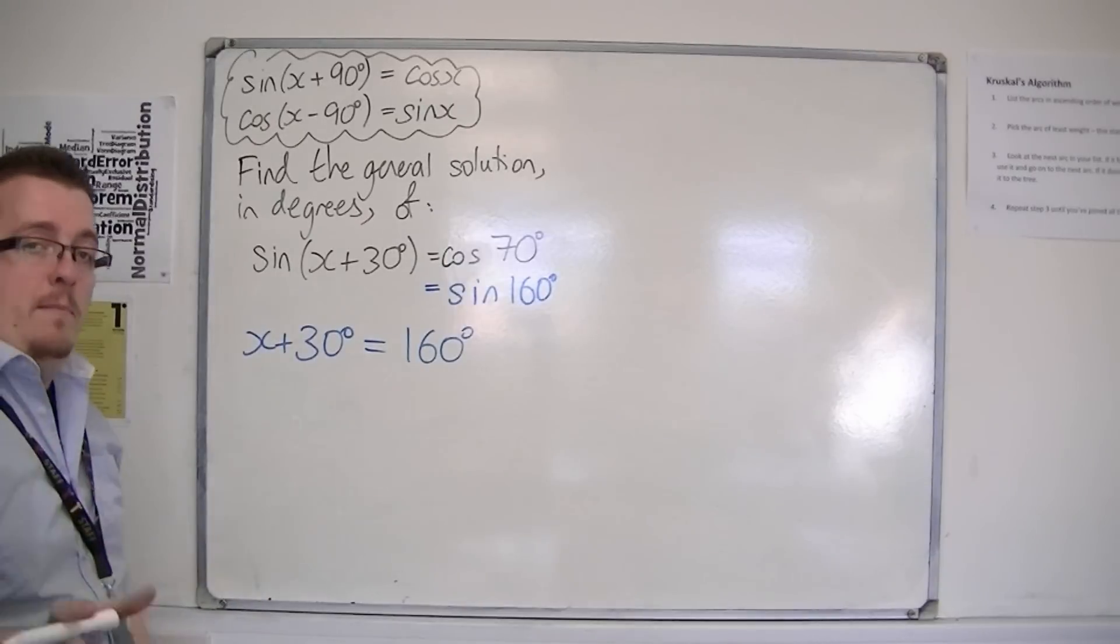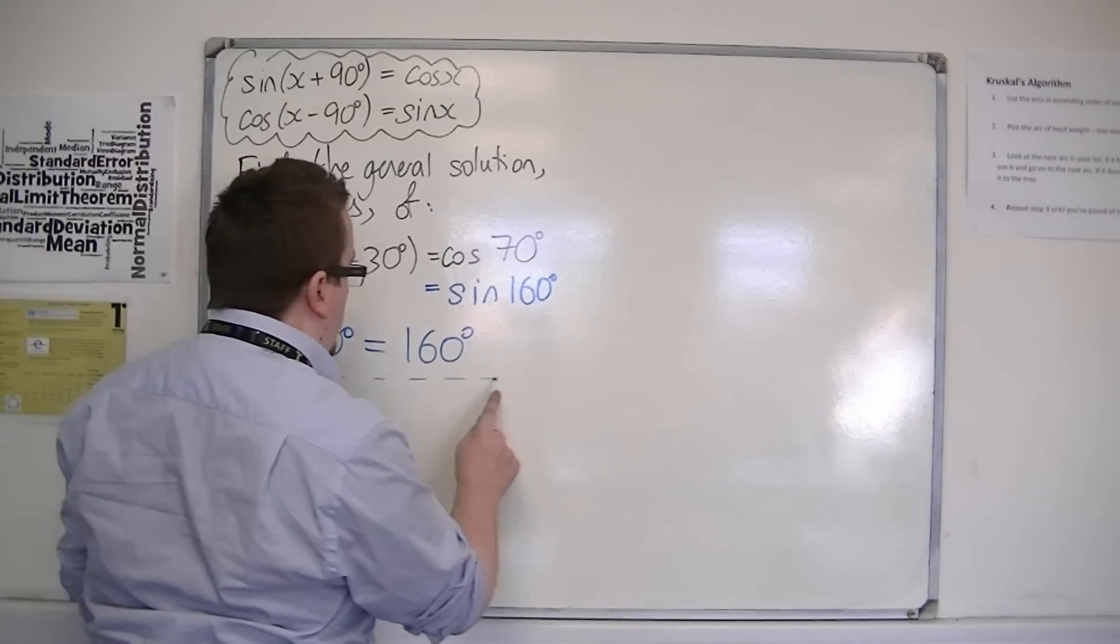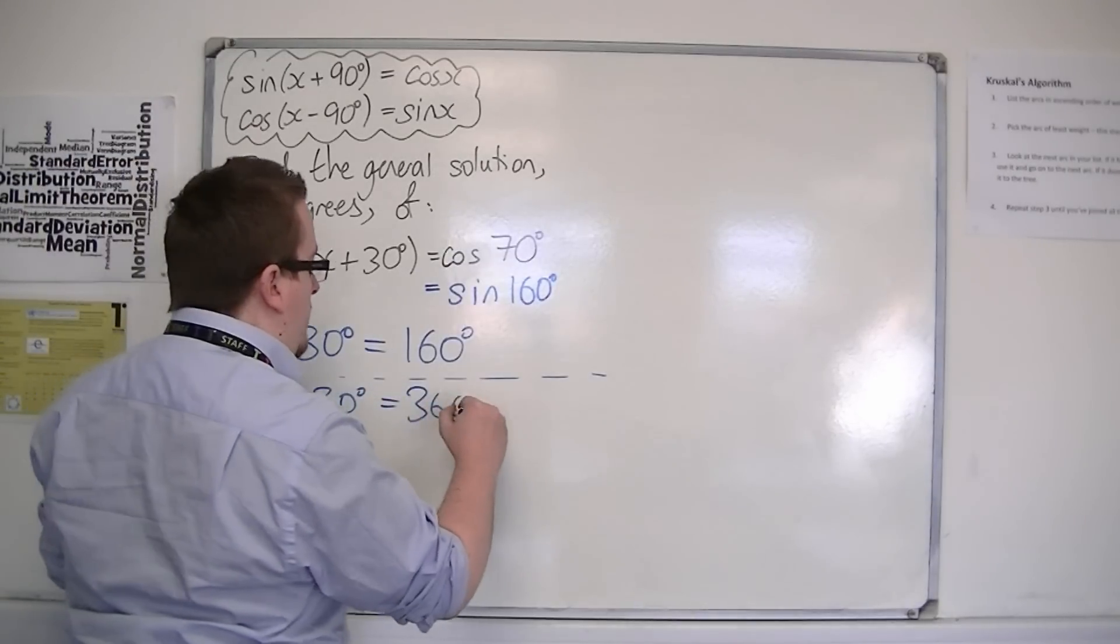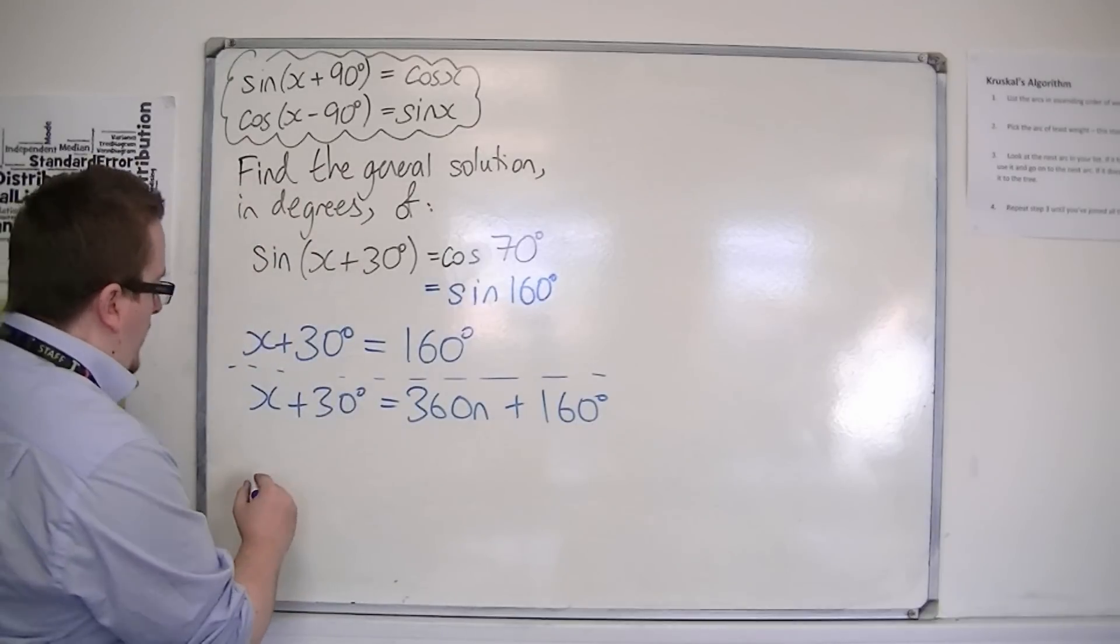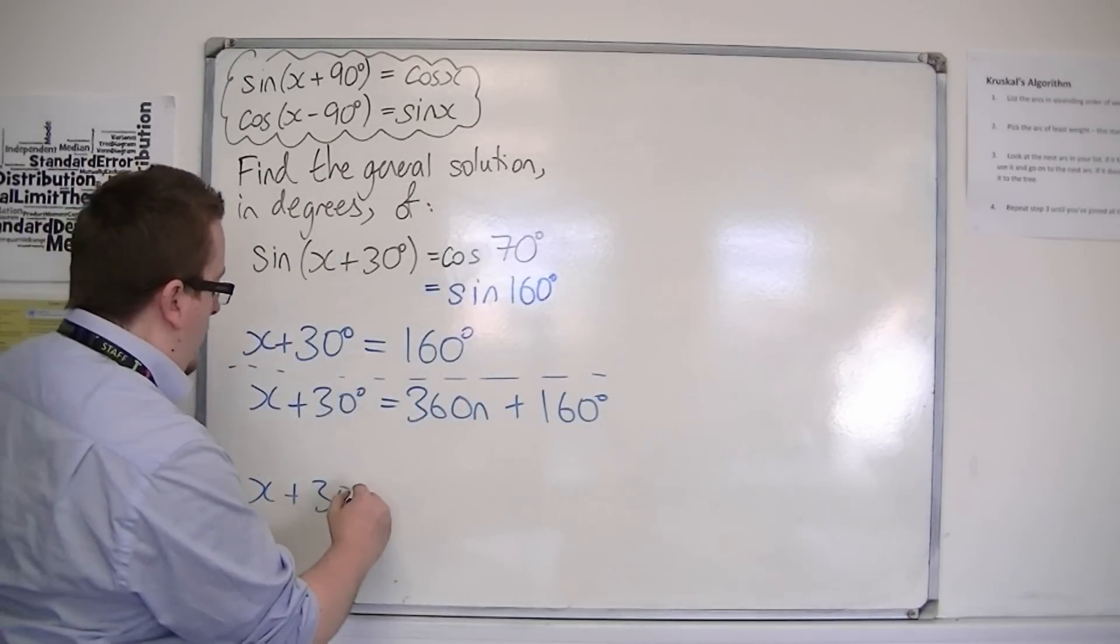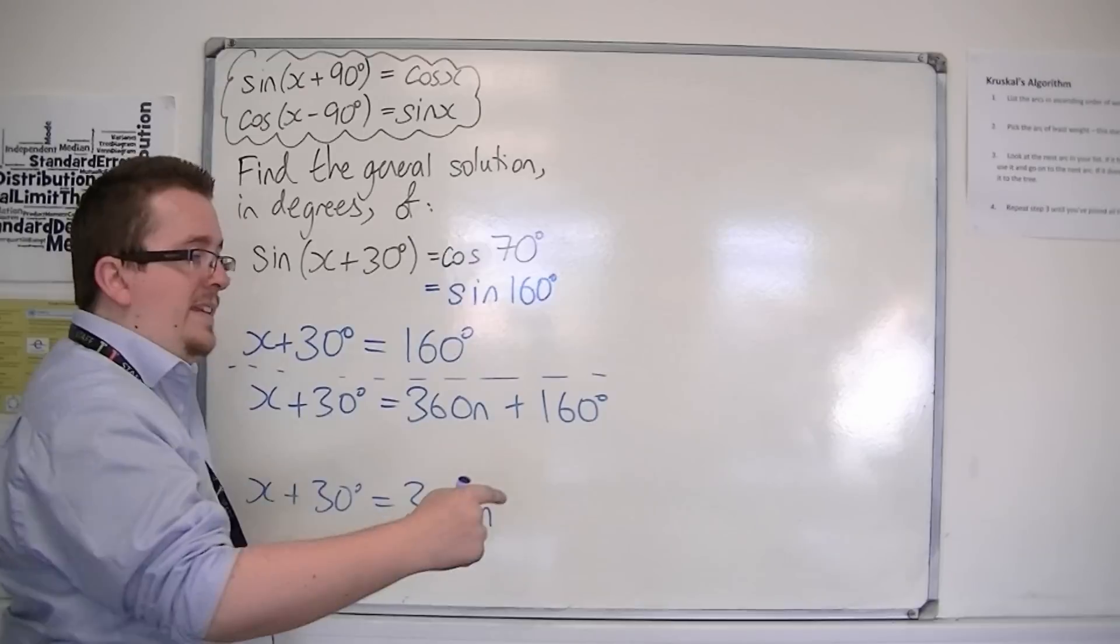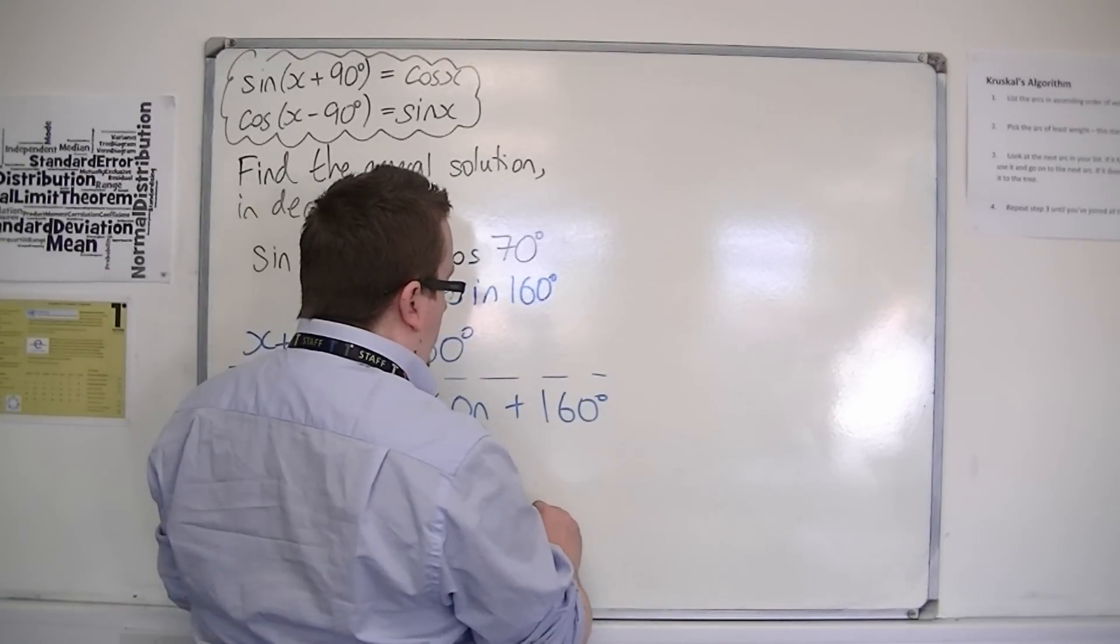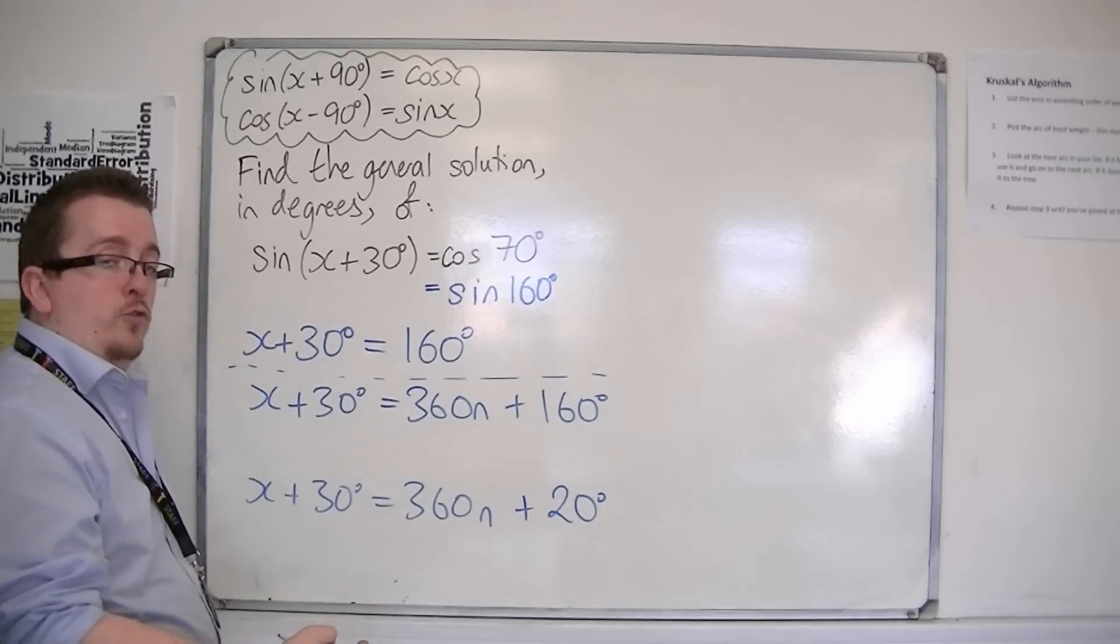But remember, we're trying to find the general solution, so we're going to put in 360n plus 160, and we're going to put in x plus 30 is 360n plus 180 minus 160, so that's plus 20, so that's 180 minus 160.